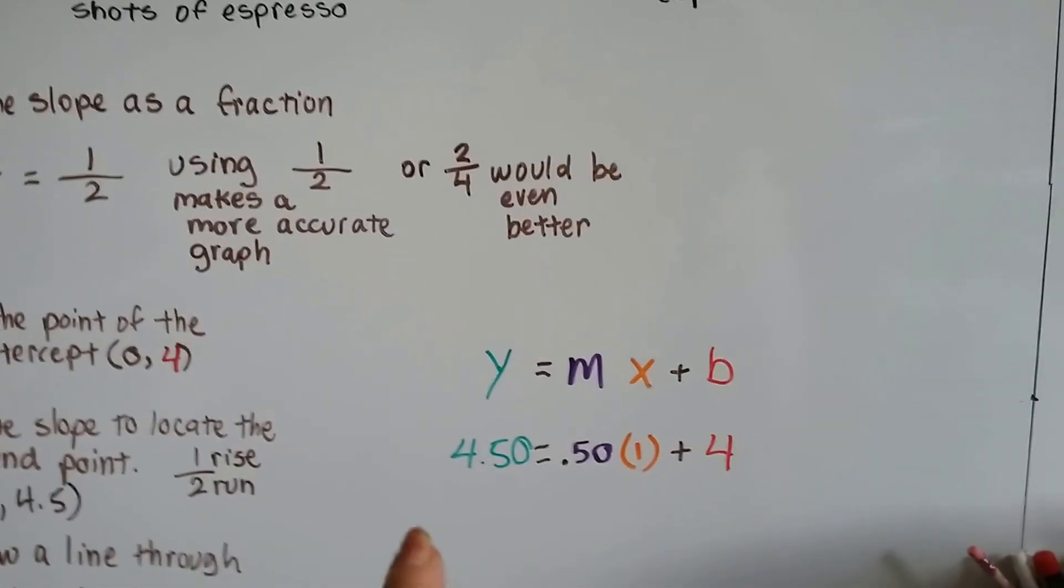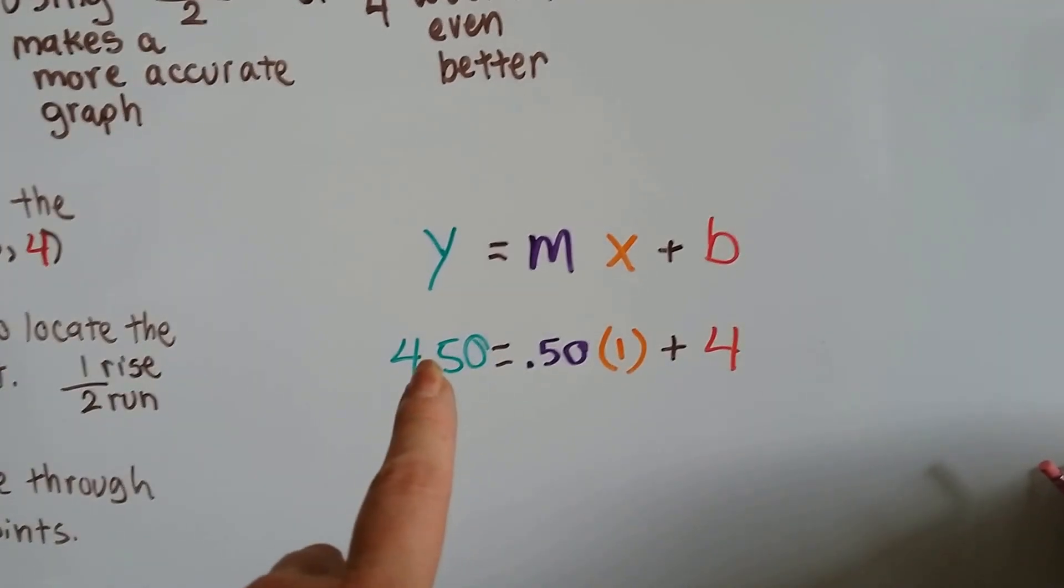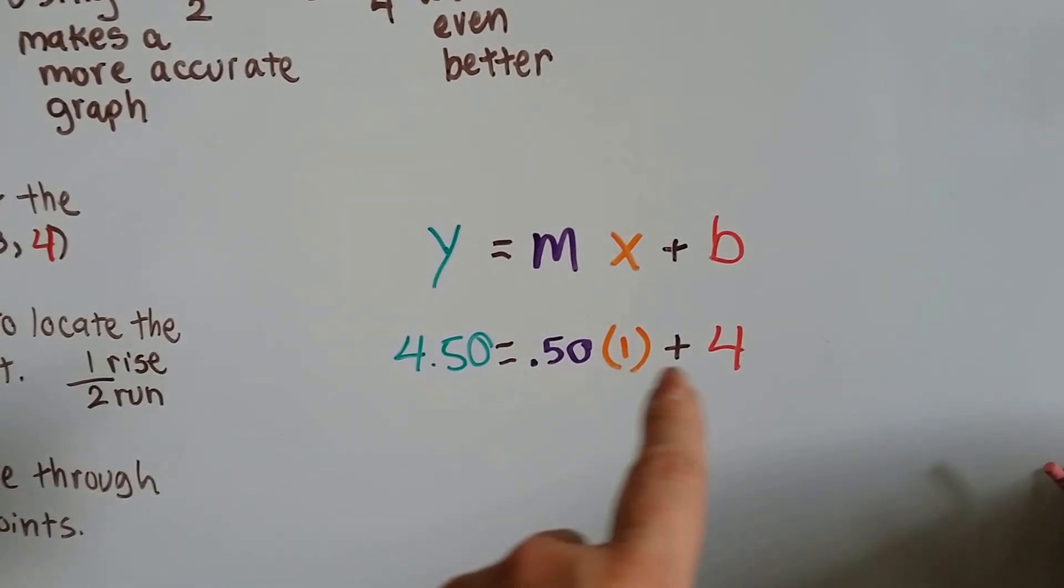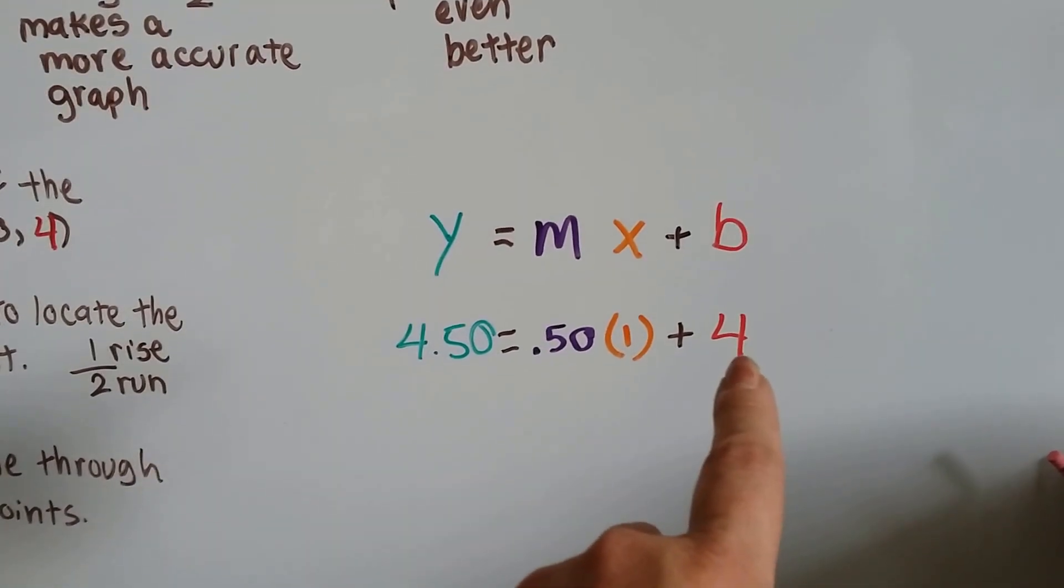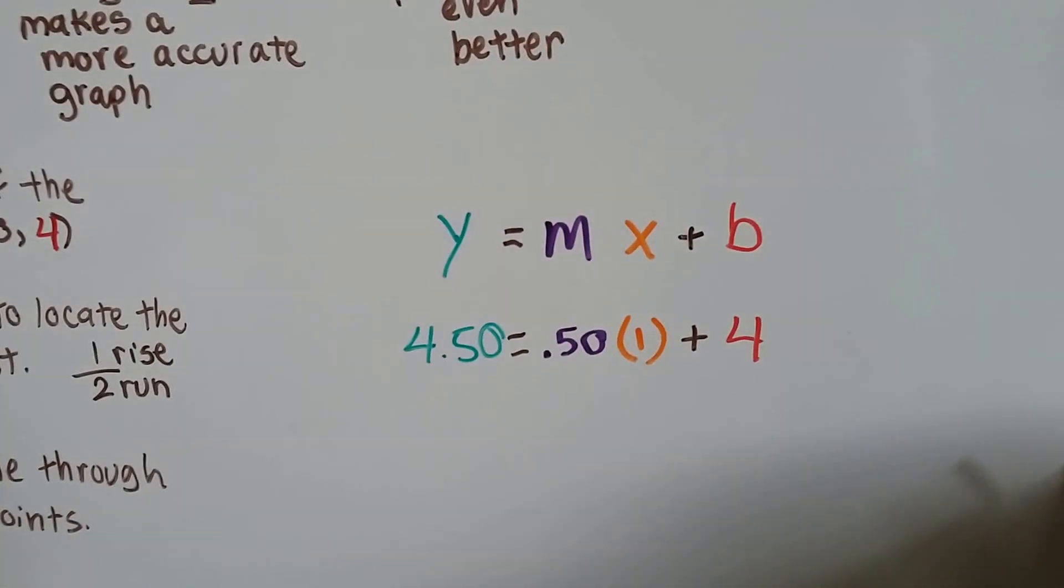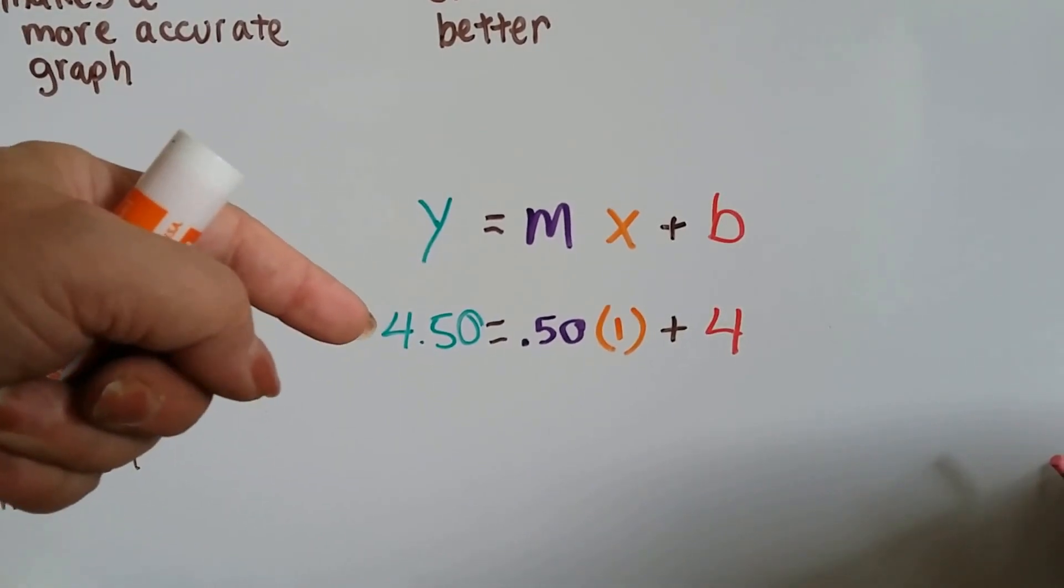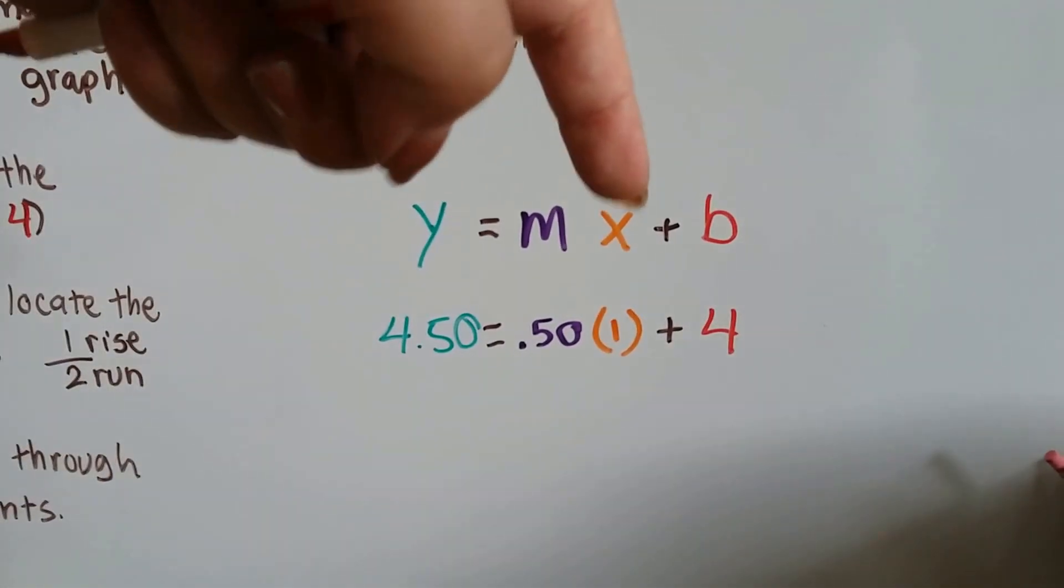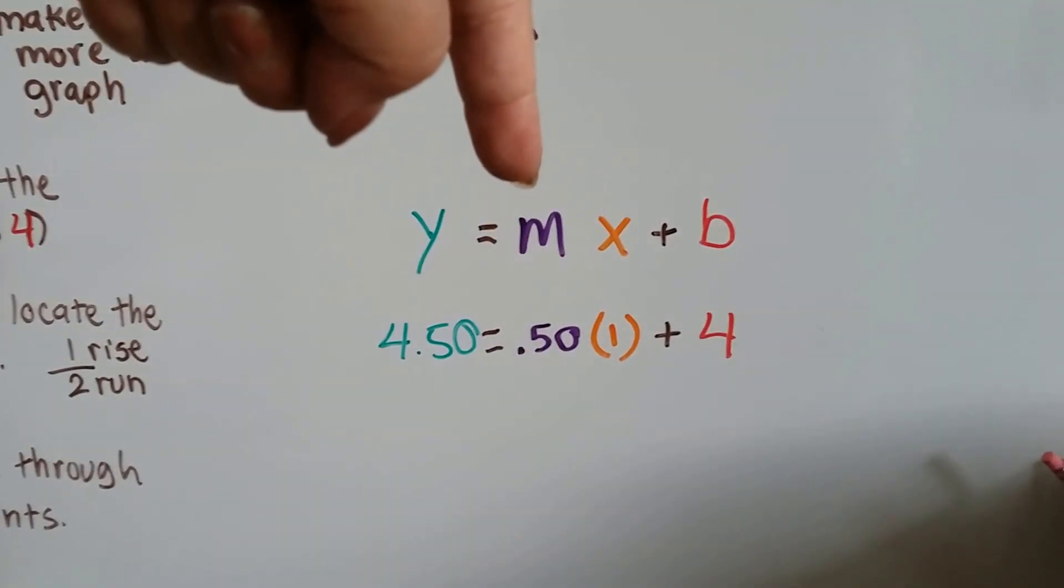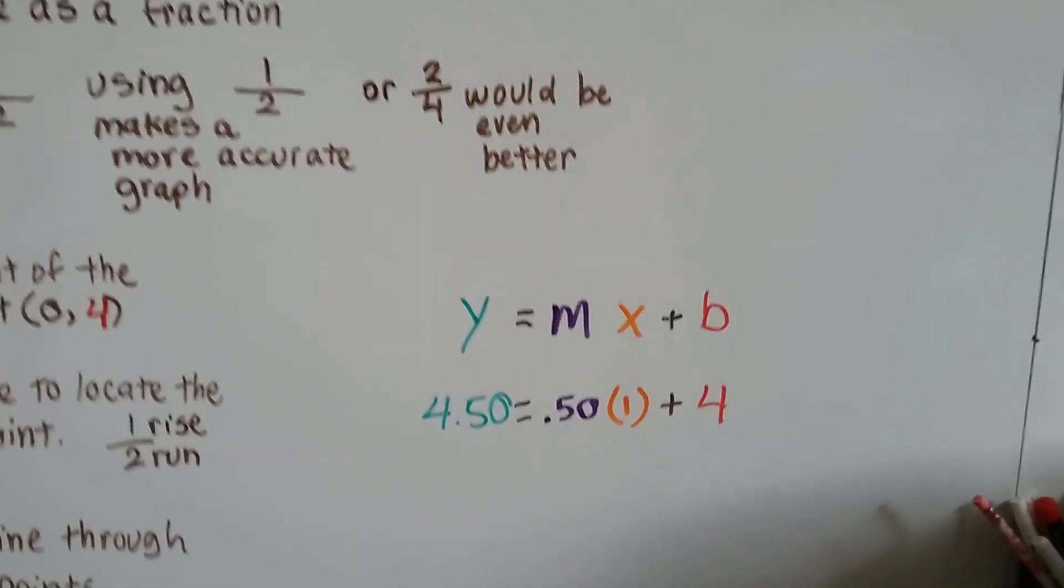You can see in the slope-intercept form how $4.50 equals $0.50 times one shot plus the $4 for the regular latte. Now you can see what y is - it's the outcome, the output. X is how many shots, and this is how much each shot costs. B is the y-intercept, how much the latte was.